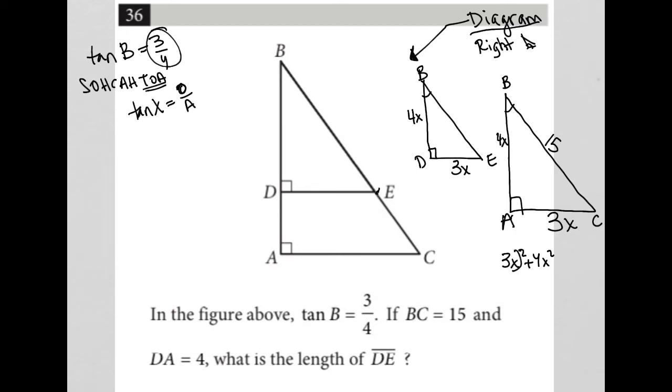So, I could just say 3x squared plus 4x squared is equal to 15 squared. I use Pythagorean theorem. But I'm always checking for shortcuts when it comes to this test because I know I don't have a lot of time.